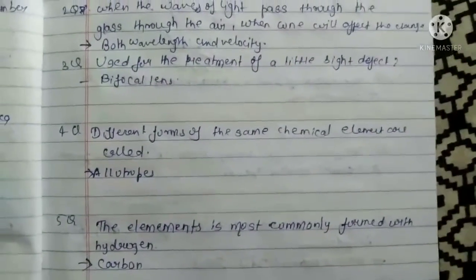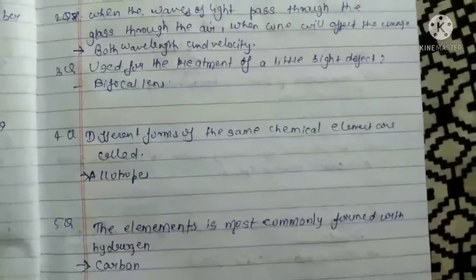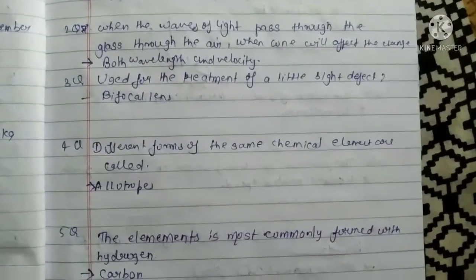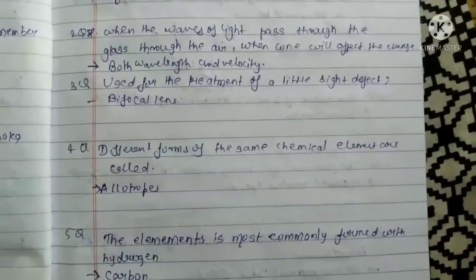Fifth, the element most commonly formed with hydrogen. The most common element with hydrogen. What do we say? Carbon.